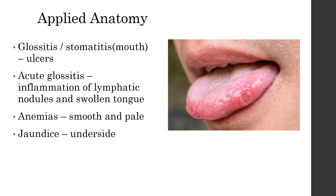In anemias, the tongue appears smooth and pale. In jaundice, jaundice is visualized on the underside of the tongue. There are also many conditions of the GI tract which are reflected on the tongue, like some fungal infections and bacterial infections, giving a typical appearance of the tongue in such infections.